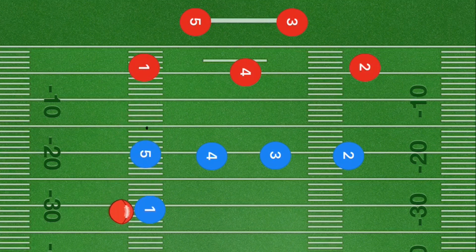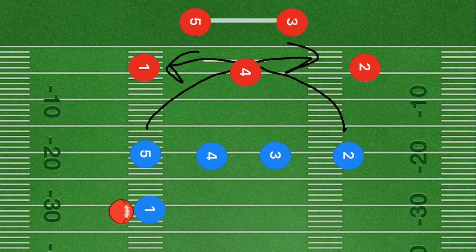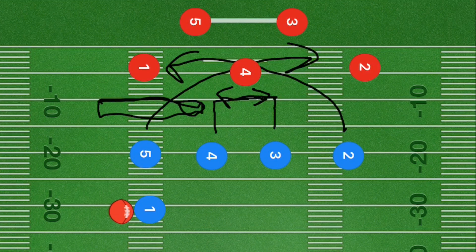In this play we're going to have player five and two crossing each other roughly 10 yards up. Next we're going to have player three go straight downfield to the five yard line and cut across the field, and then player four is going to do the exact same thing maybe one yard under. Player one can be looking for player three roughly in this area right here, or he could be looking for player two over here.